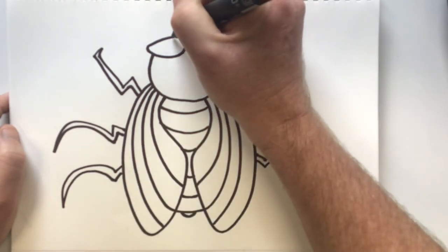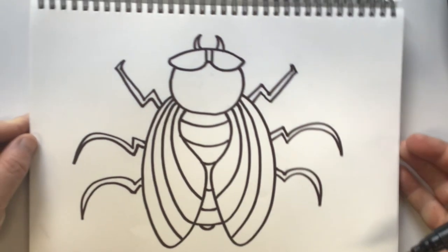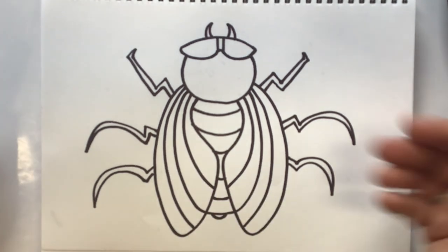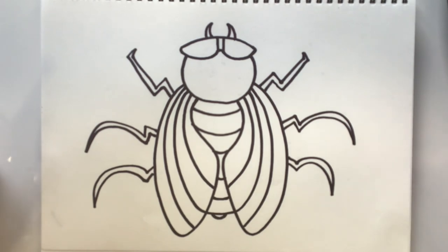Okay, and then we've got our legs. Let's just put on some little things at the front for his mouth. And now we have a fly. All you need to do now is color it in, and you can color it in however you like. Good luck.